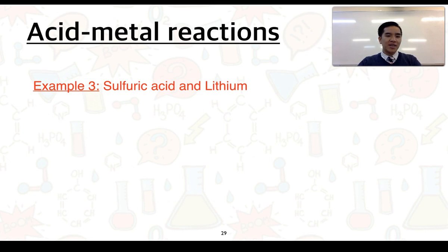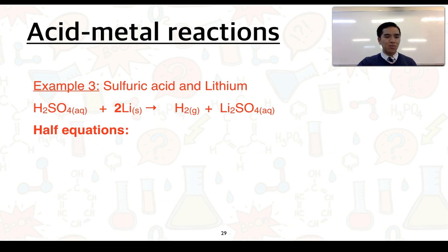Example three, third and final example, sulfuric acid and lithium. We've got here H2SO4 plus Li producing H2 and Li2SO4. We take this formula equation, break it up into half equations. The important component in the acid is the H+. So this is the key change that's happening. H+ becoming reduced to form H2.